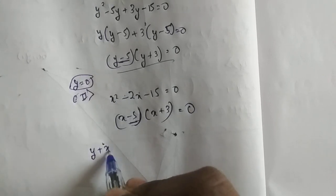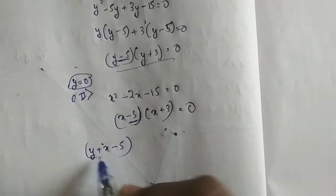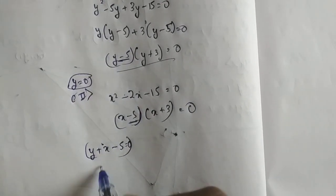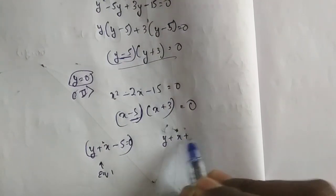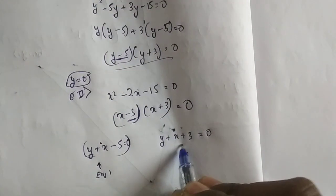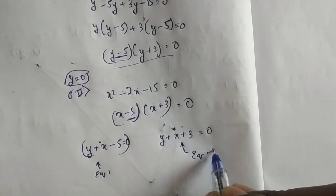So I will write x minus y minus 5 equals to 0 as equation 1, and x plus y plus 3 equals to 0 as equation 2.